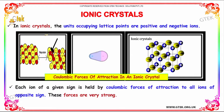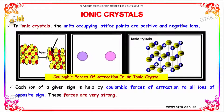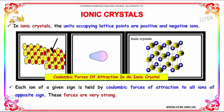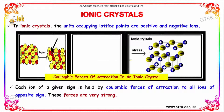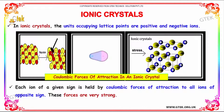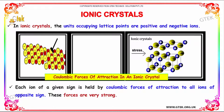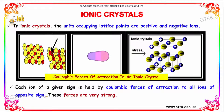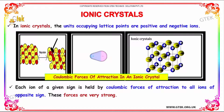In ionic crystals, the units occupying the lattice points are positive and negative ions. Each ion of a given sign is held by Coulombic forces of attraction to all ions of the opposite sign. These forces are really strong.